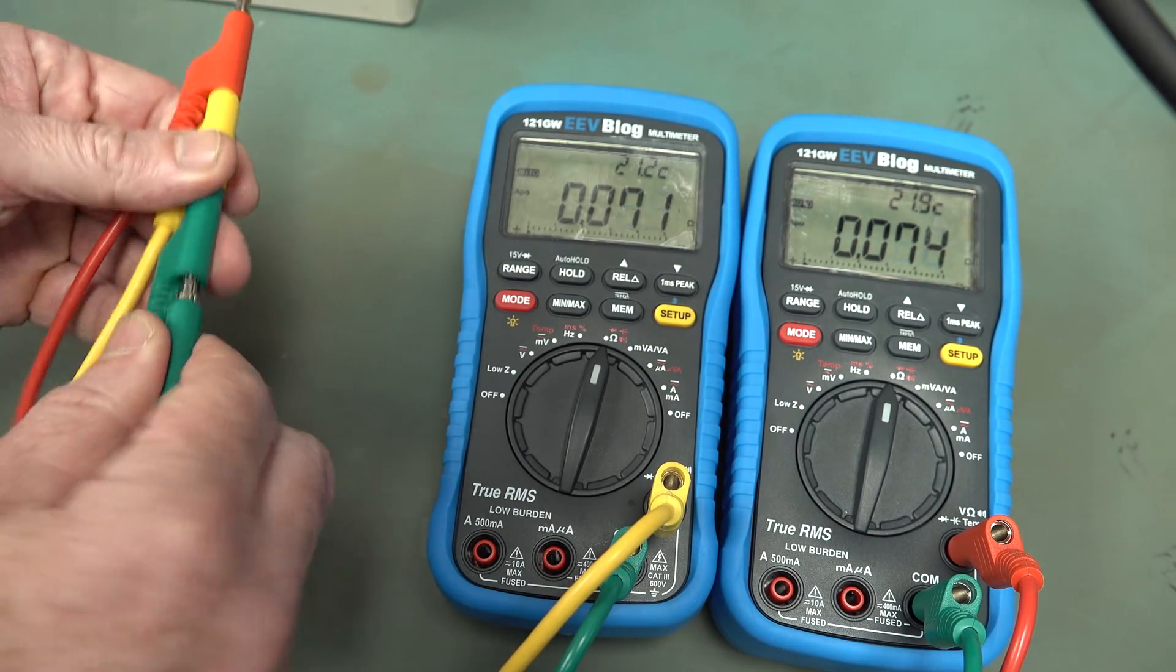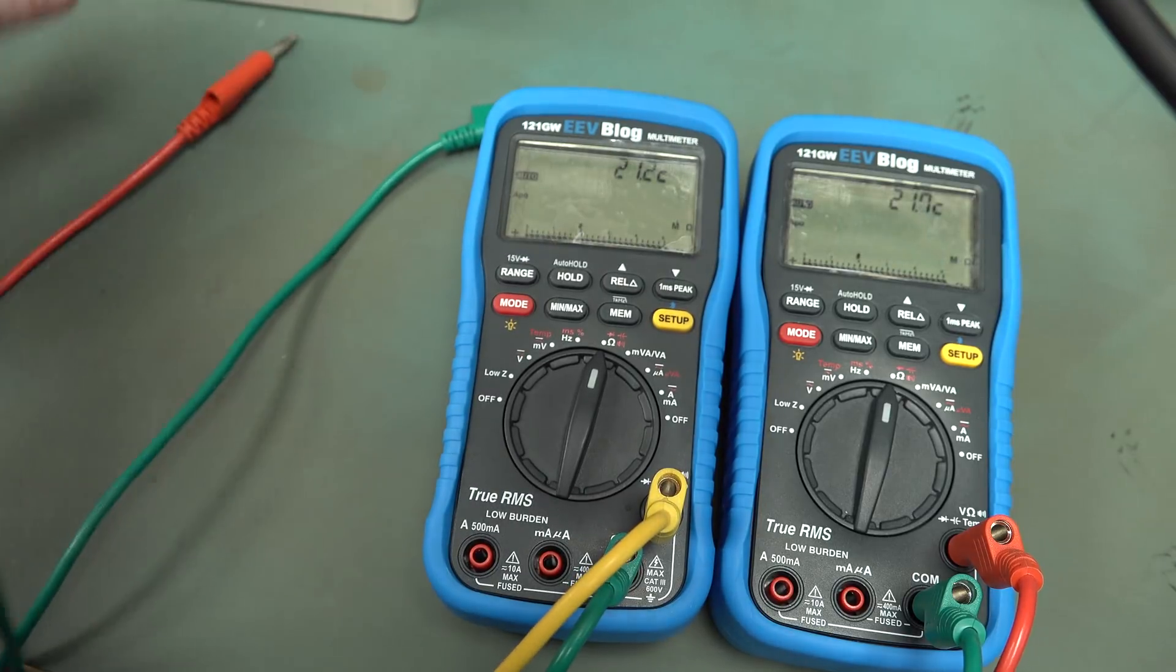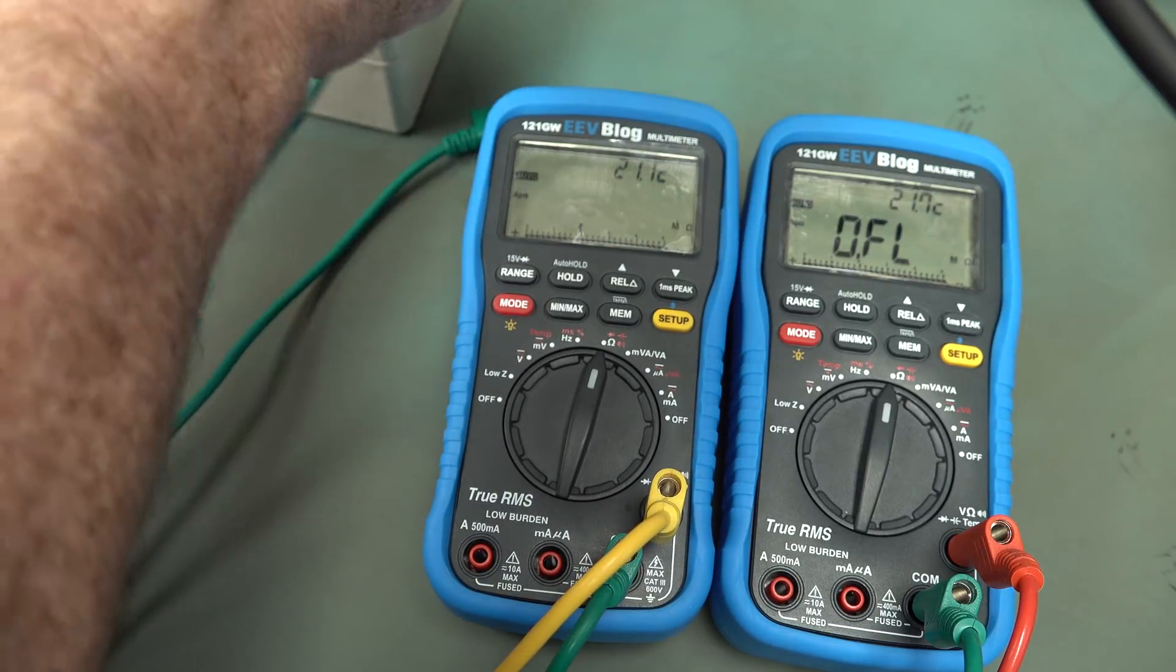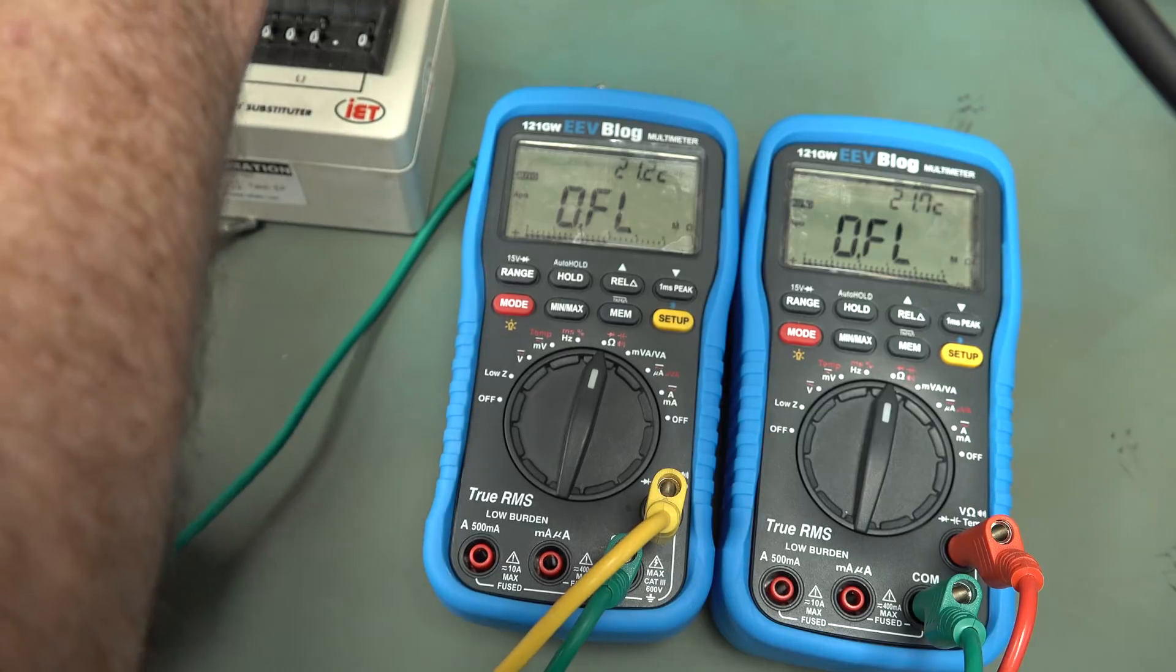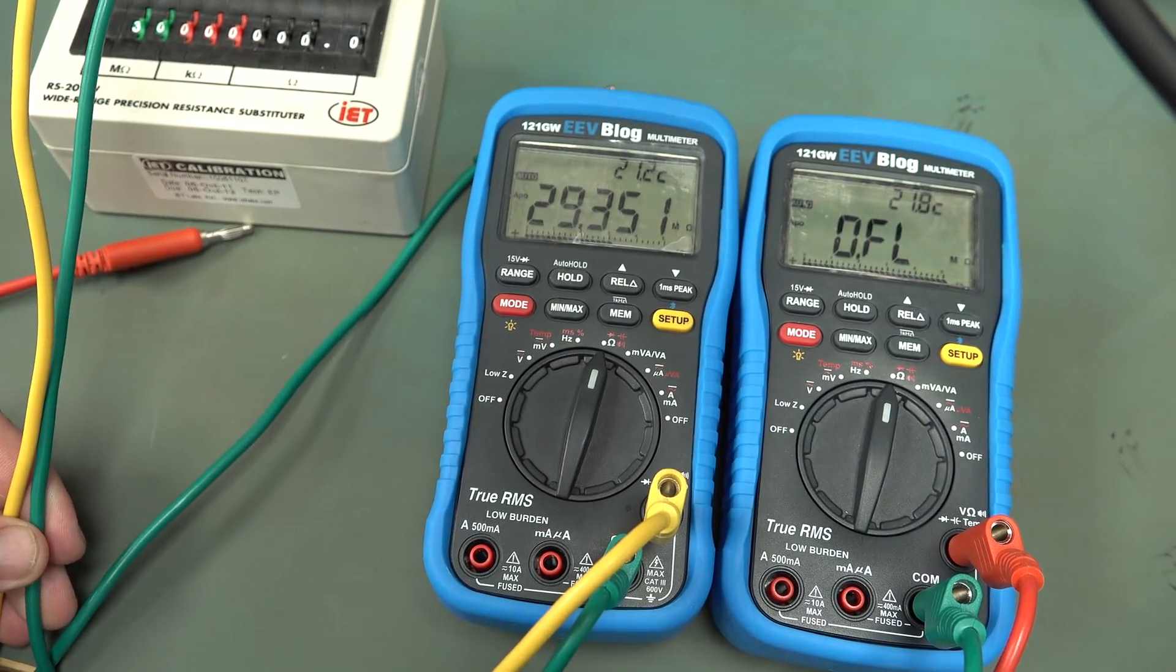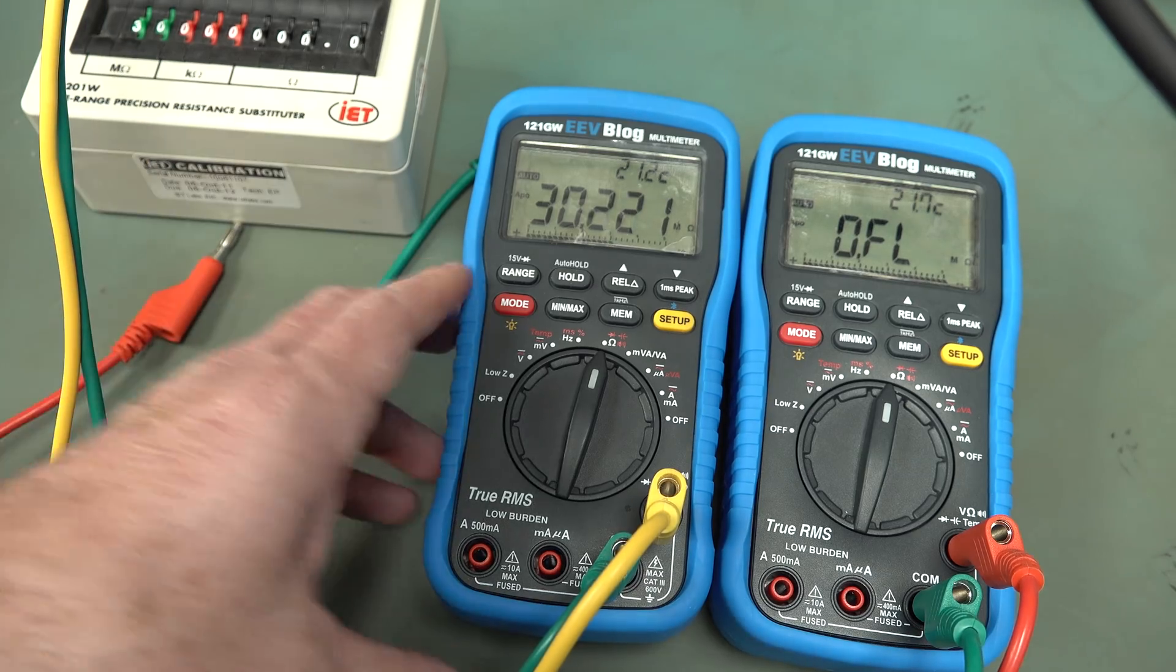Now let's have a look. We will now try a 30 meg resistor. Caught on the tripod leg. Sorry. There we go.